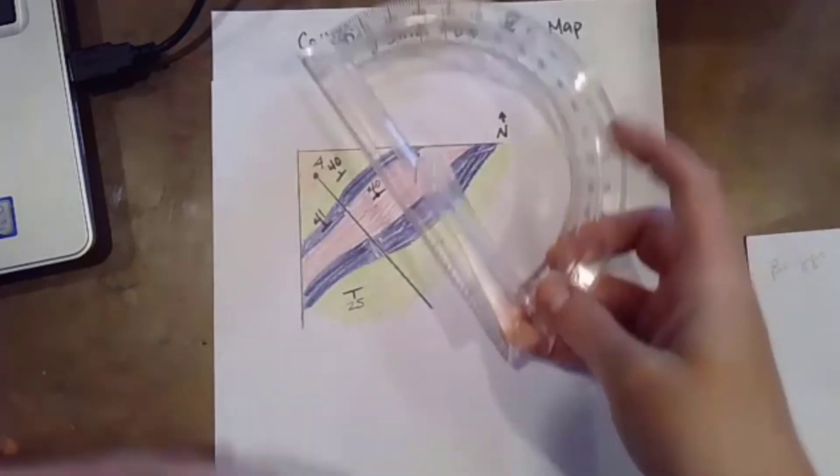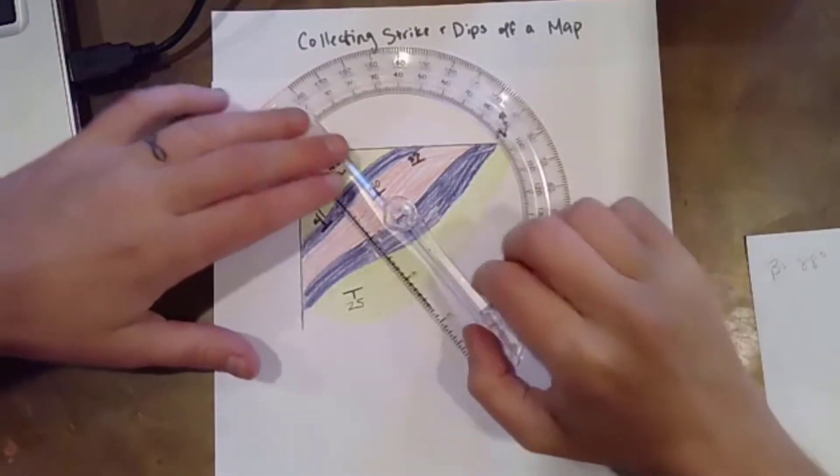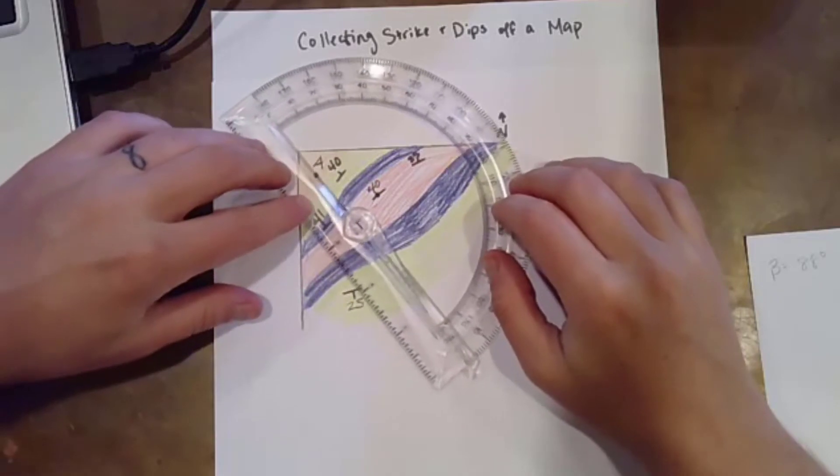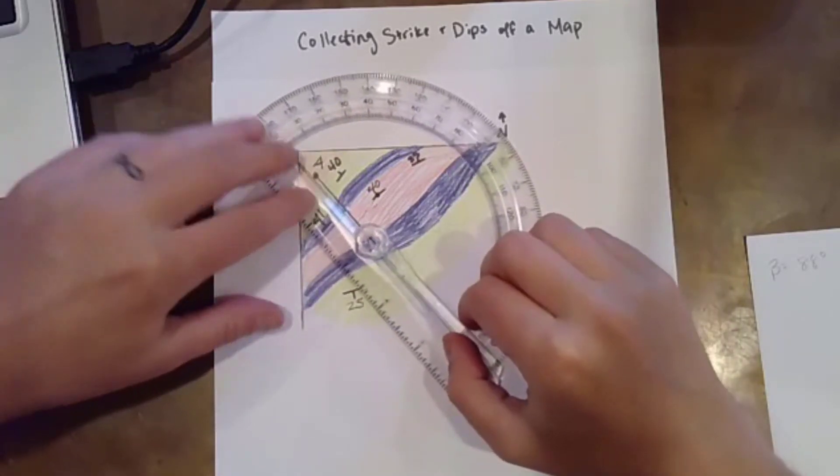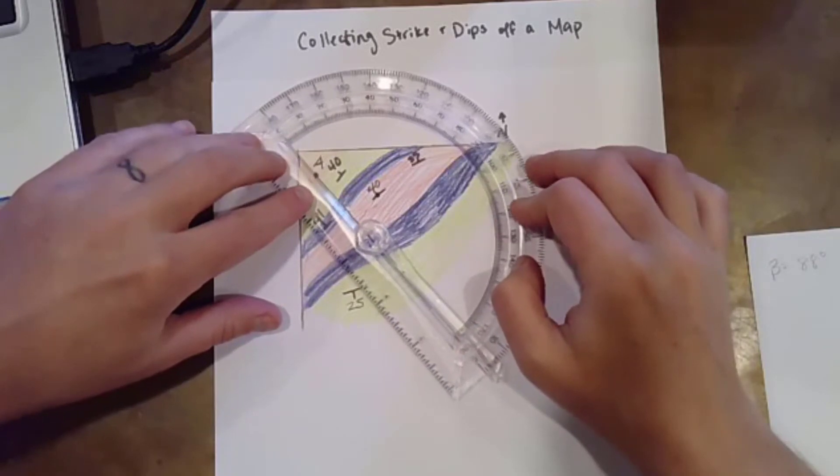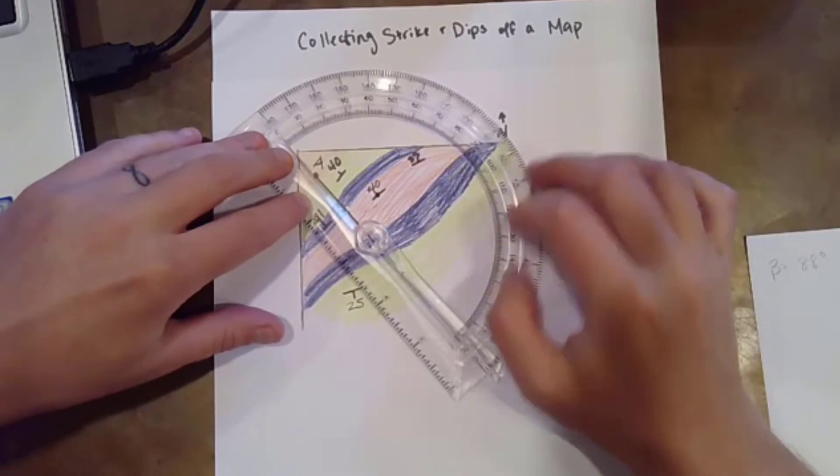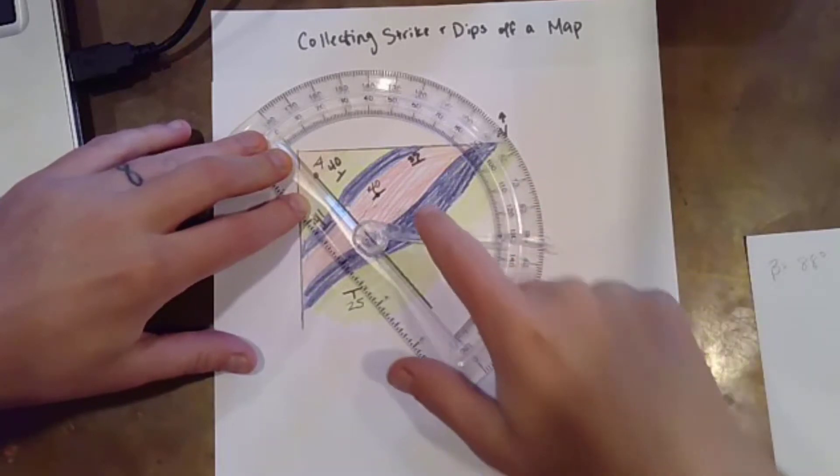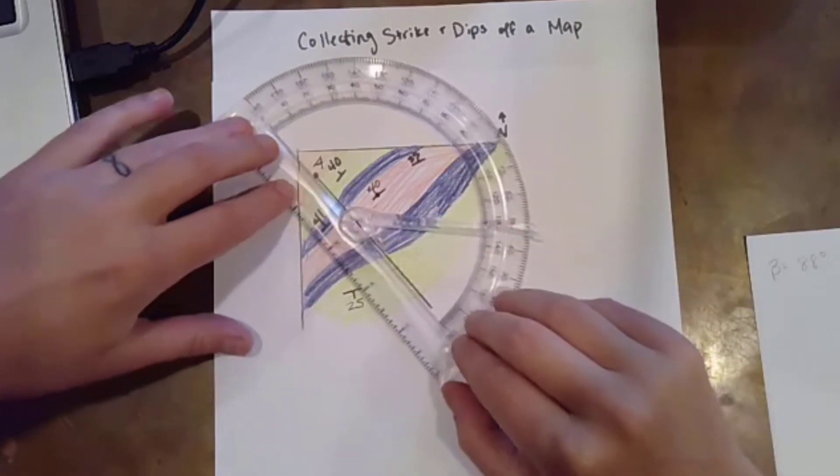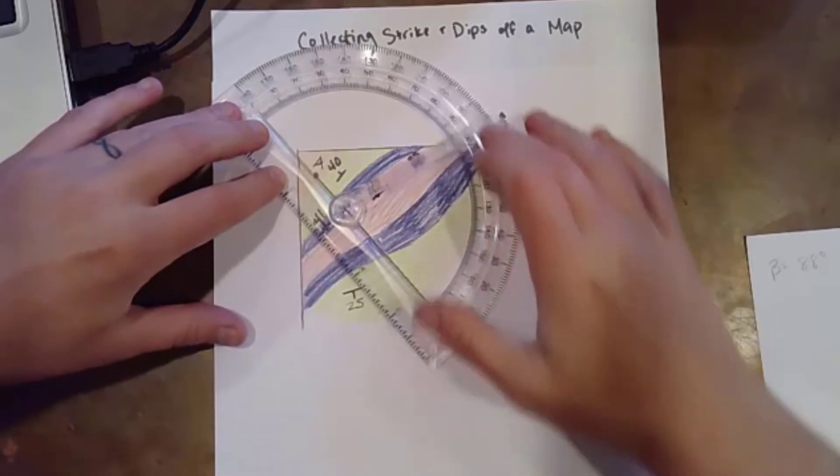You're going to take your protractor and you're going to put whatever the flat line portion of your protractor is along your line along which you're constructing your cross section. And you're going to rotate your arm until your arm is lined up with that strike. So I'm going to come up here, rotate that.